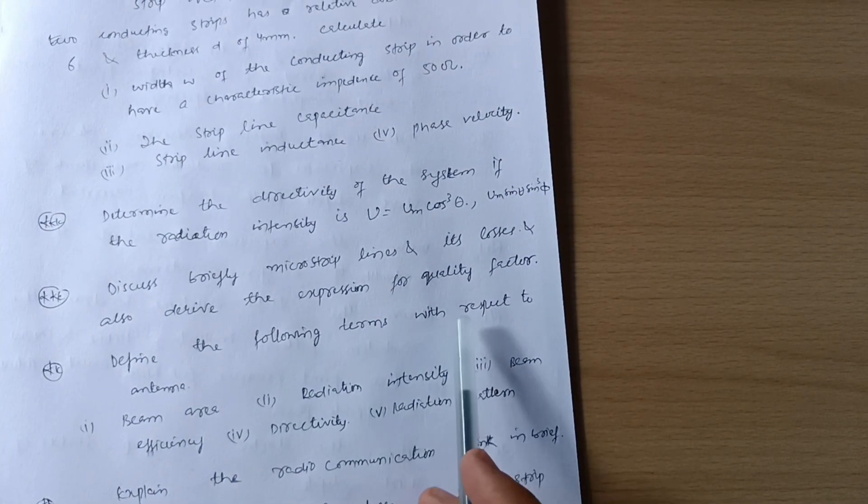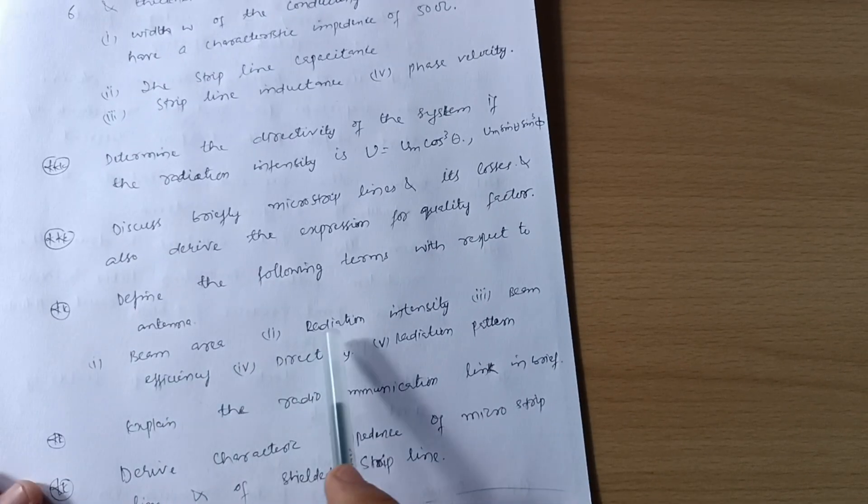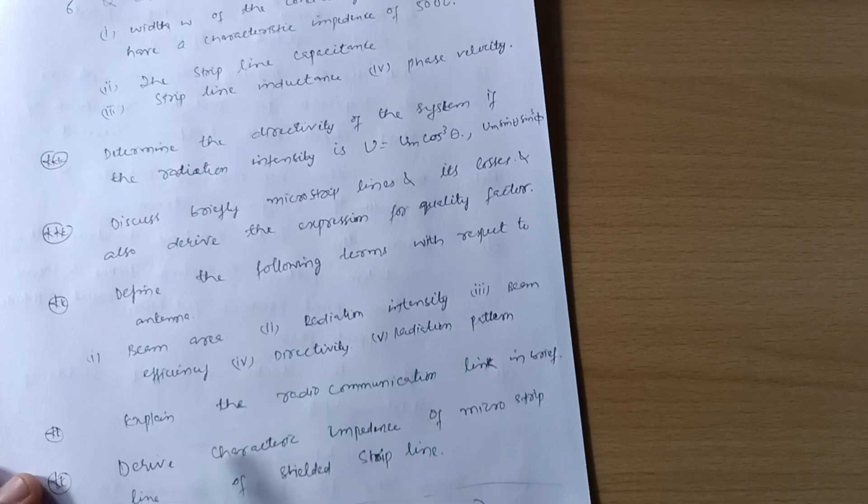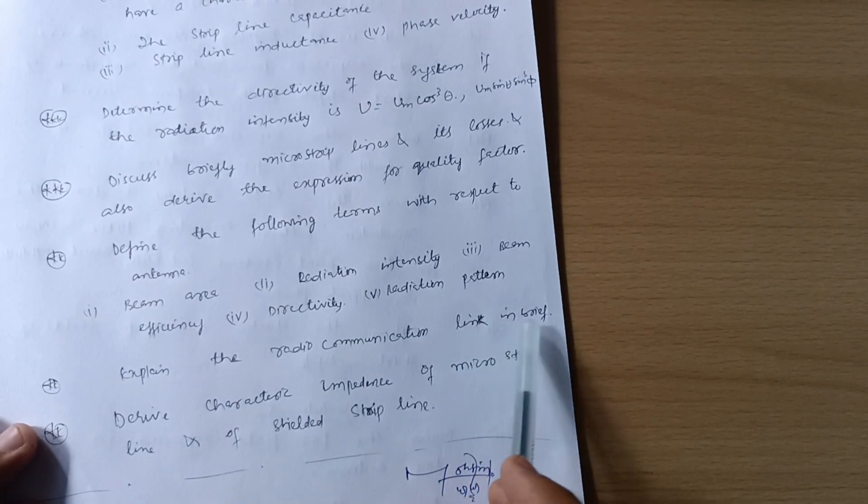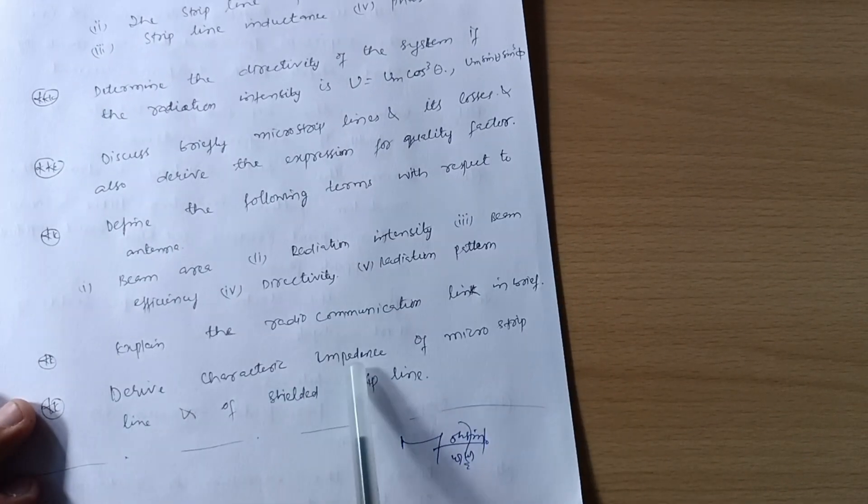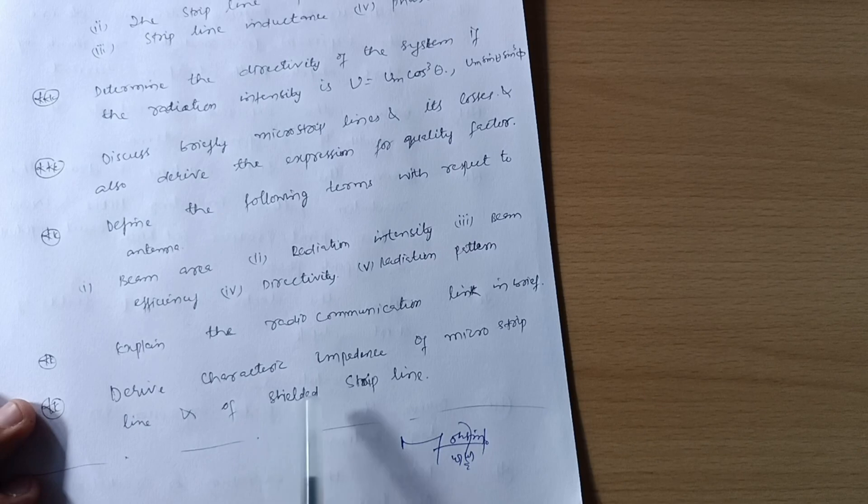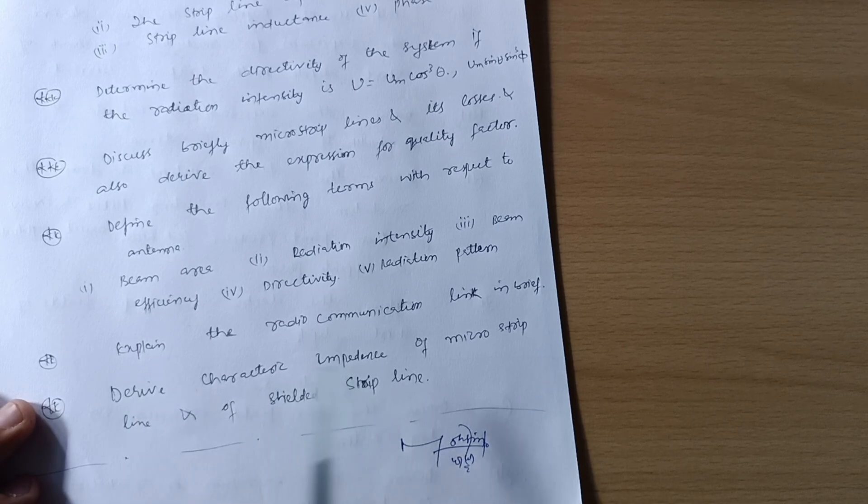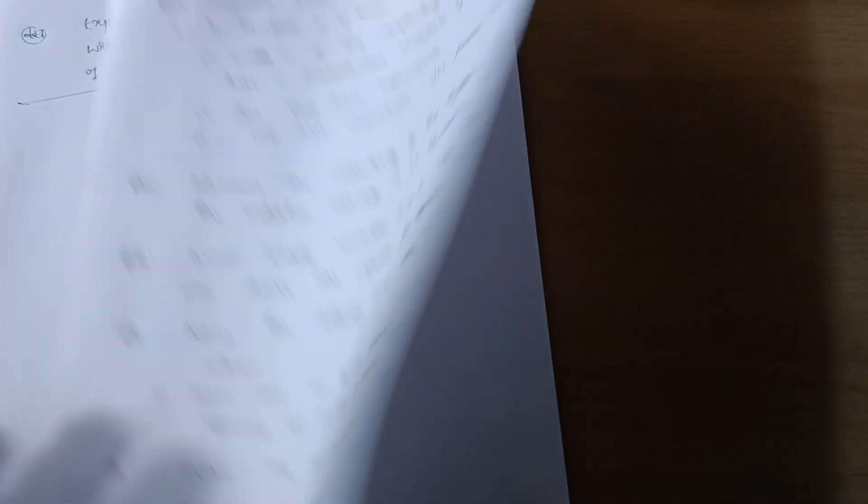Next is the another question: define the following terms with respect to antenna: beam area, radiation intensity, beam efficiency, directivity, radiation pattern. And explain the radio communication link in brief. Derive characteristic impedance of microstrip line and of shielded strip line. So for both these strip lines you have to derive characteristic impedance. This is all about Model 3.